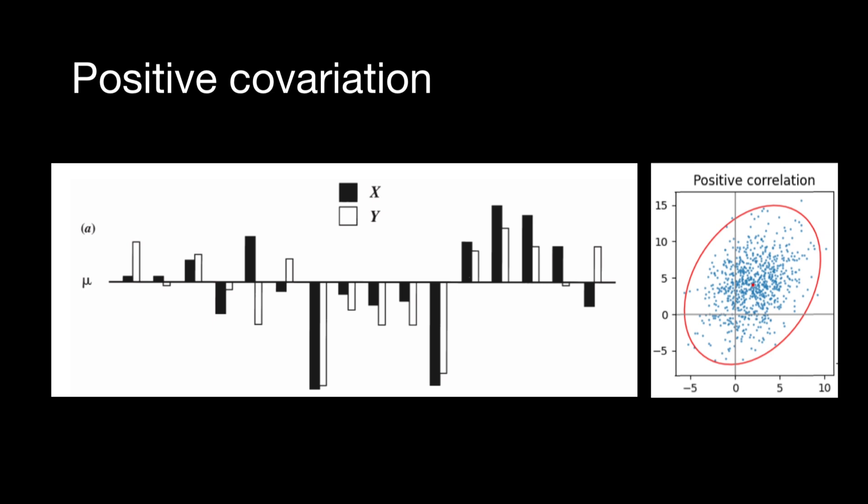Likewise, negative deviations for X are quite consistently associated with negative deviations for Y. Furthermore, larger deviations tend to be paired with larger deviations, and smaller deviations tend to be paired with smaller deviations.